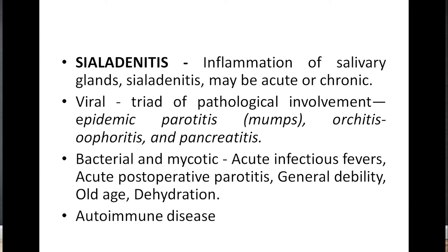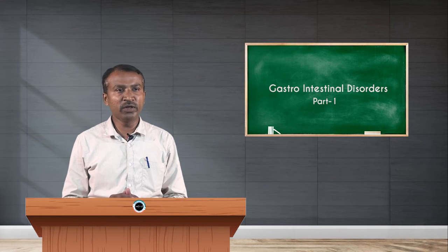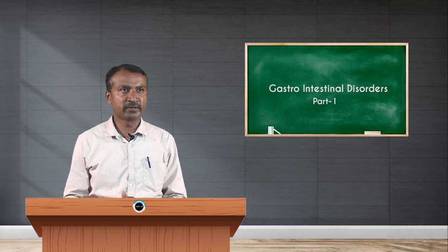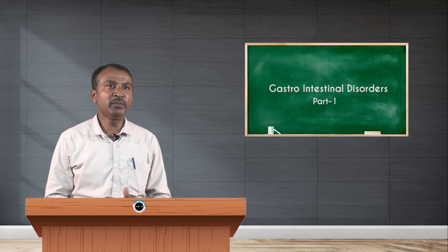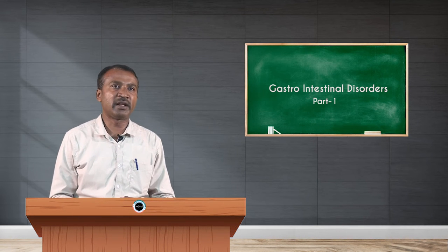Sialadenitis can be caused by different microorganisms. Viral involvement is mainly seen in parotitis, orchitis, oophoritis, and pancreatitis. In bacterial and mycotic infections, it is mainly seen in acute infectious fevers, acute postoperative parotitis, general debility, old age, dehydration, and some autoimmune diseases.